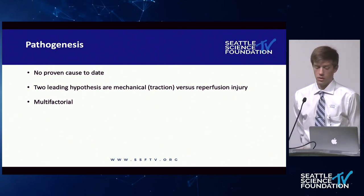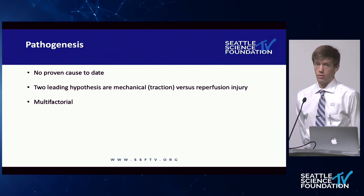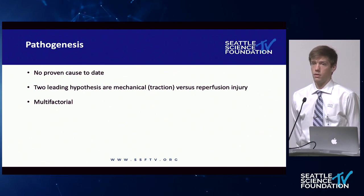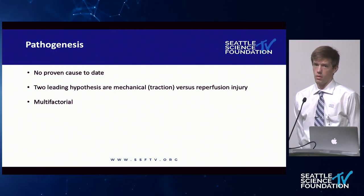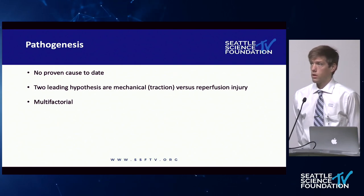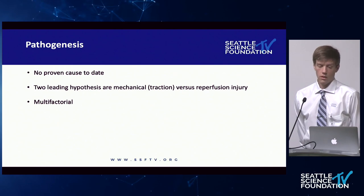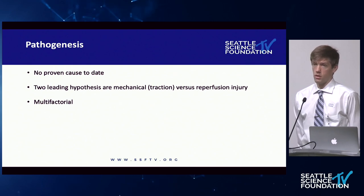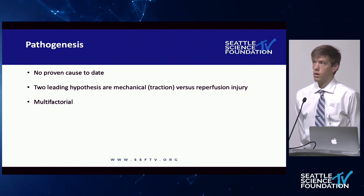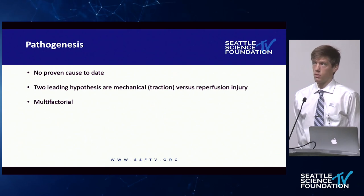The pathogenesis is not clear. There is no proven cause to date, but there are a number of hypotheses, and in all likelihood it is multifactorial. The hypotheses range from direct traumatic injury of the nerve root to ischemic changes. The two leading hypotheses from my literature review were mechanically related — specifically traction of the C5 nerve root — versus reperfusion injury.